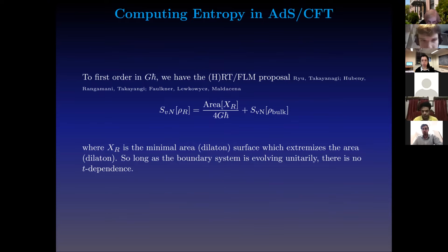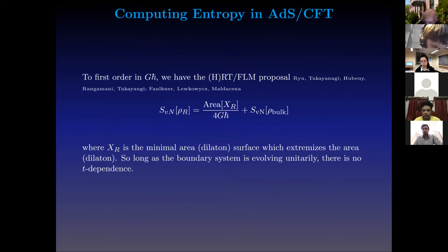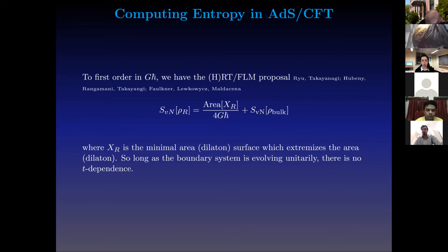To zeroth order in G h-bar, we have the HRT/FLM proposal. Working to zeroth order in G h-bar: if we compute the von Neumann entropy of some reduced density matrix — we take some boundary subregion R, look at the reduced density matrix of that subregion — we can calculate its von Neumann entropy using the area of an extremal surface in the bulk. X_R is the minimal area surface that extremizes the area functional and is homologous to the region R. To go to first order in G h-bar, we also need to add the von Neumann entropy of bulk quantum fields across the surface. In 1+1 dimensions there's no area to speak of, so instead we extremize the dilaton.